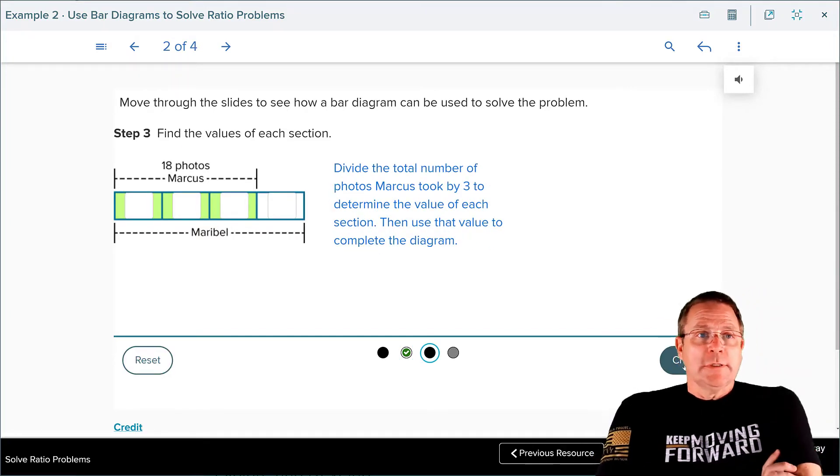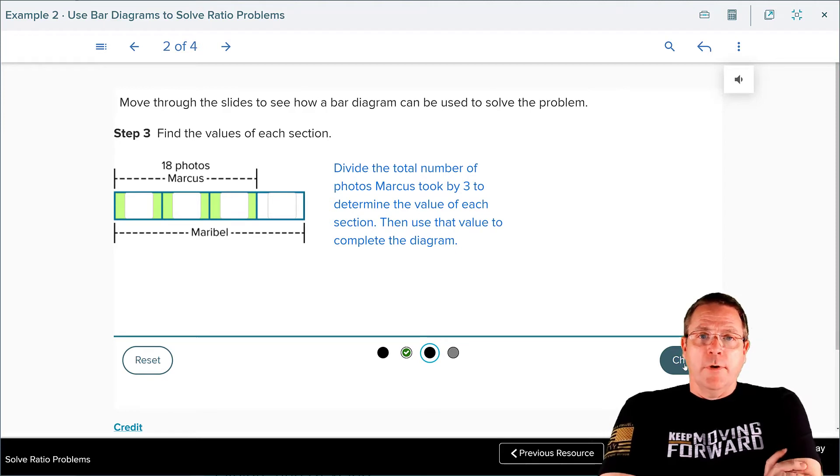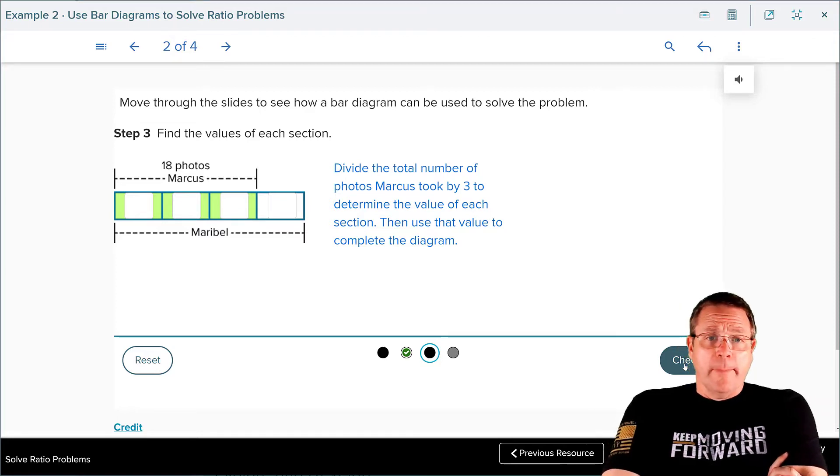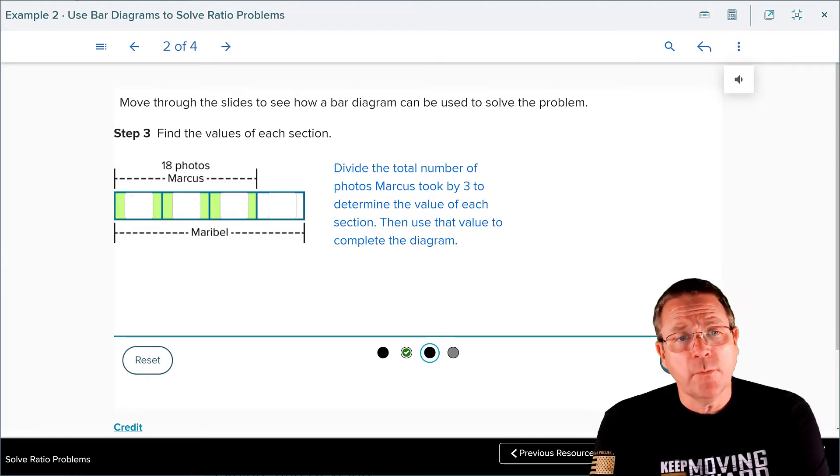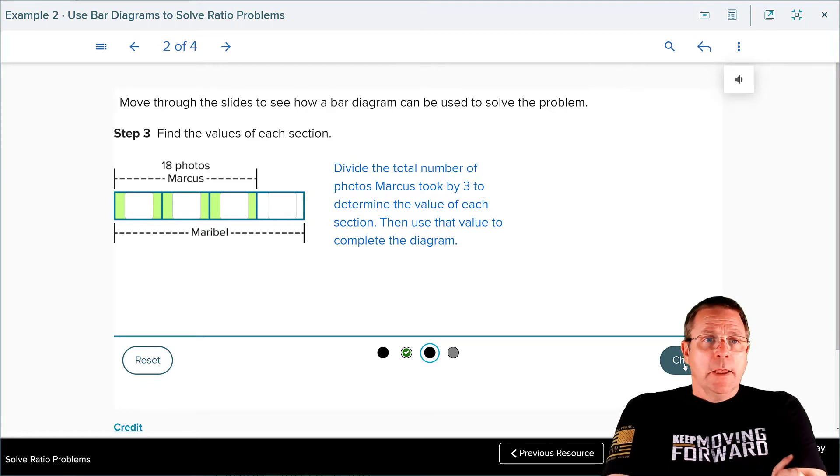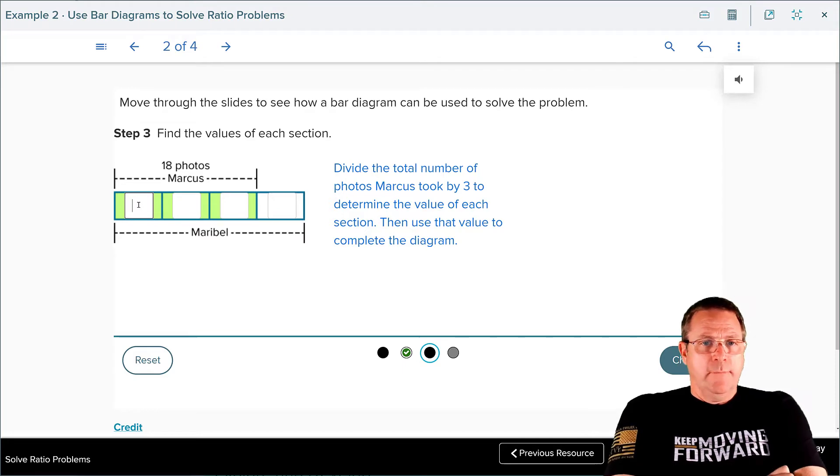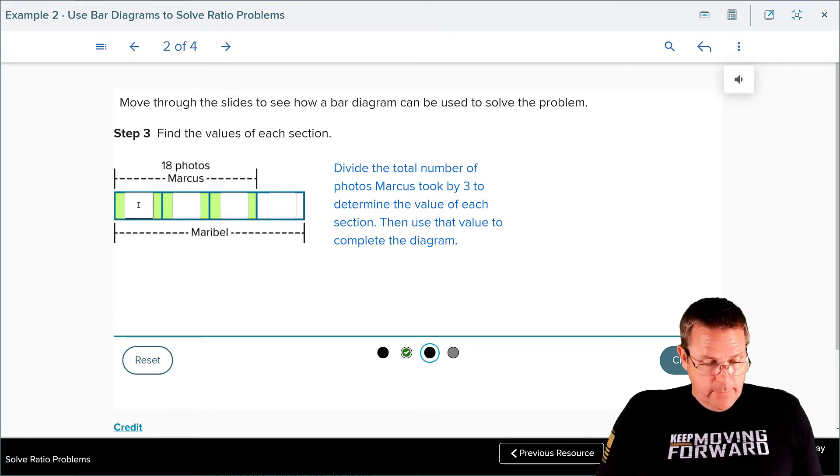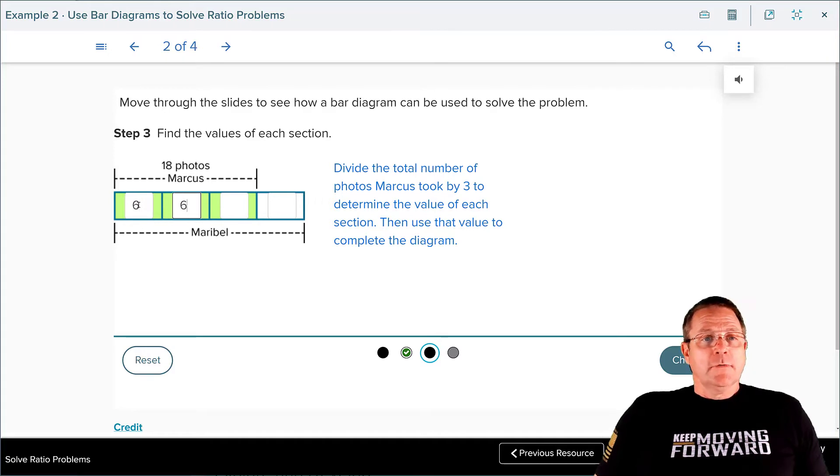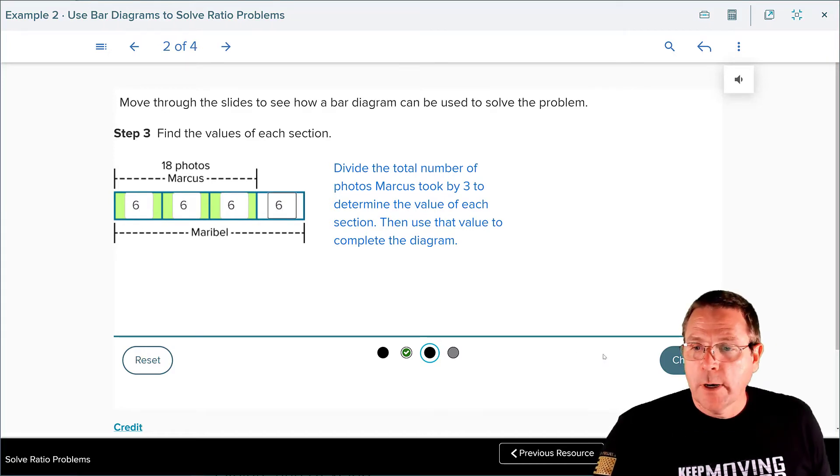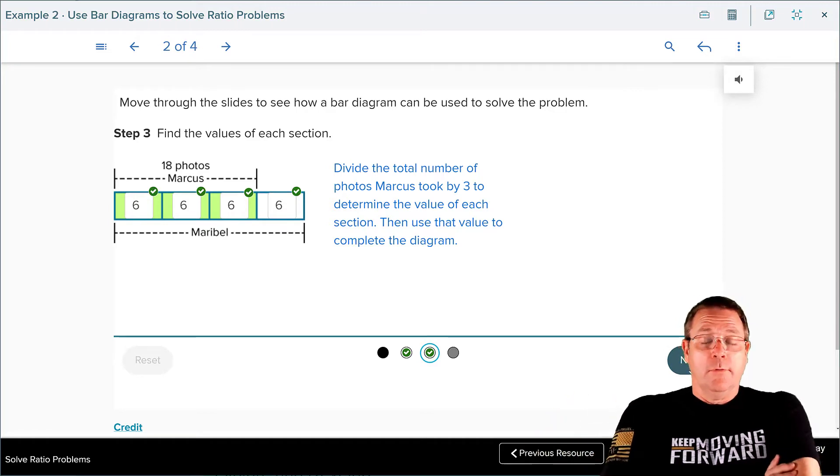The next thing it wants us to do is divide the number of photos Marcus took by three. That way we're going to find out how many photos need to go in each one of those four boxes. If you took the 18 photos Marcus took and divide it by three, 18 divided by three is six. Six, six, six, and six. We hit our check button and once again we're totally rocking on here.